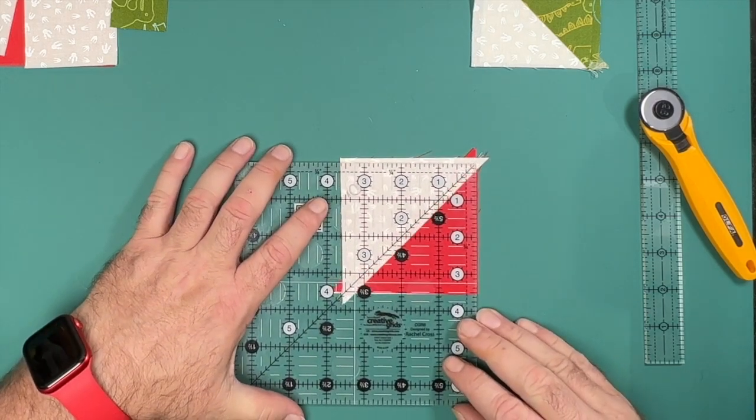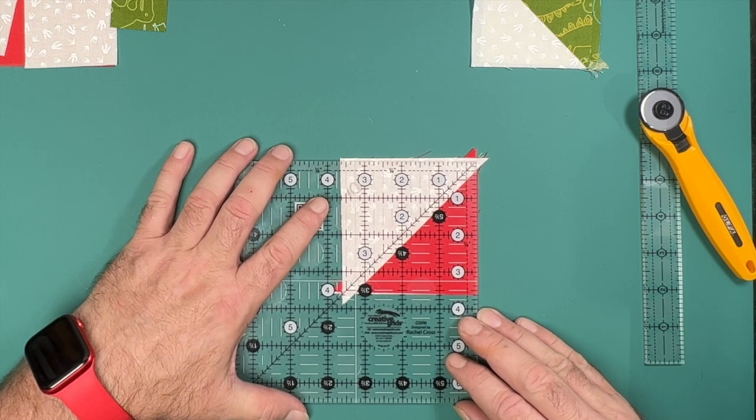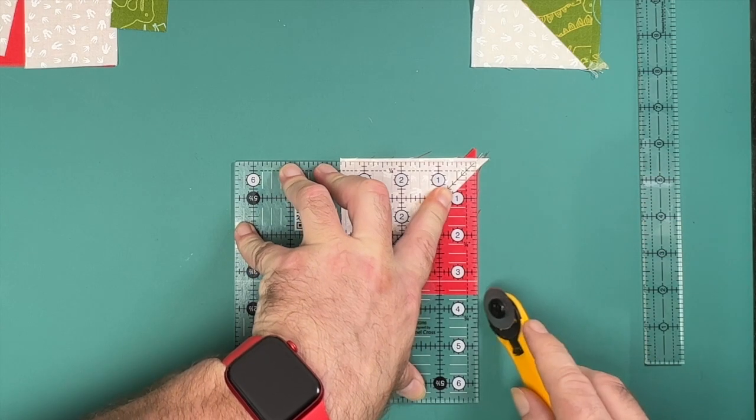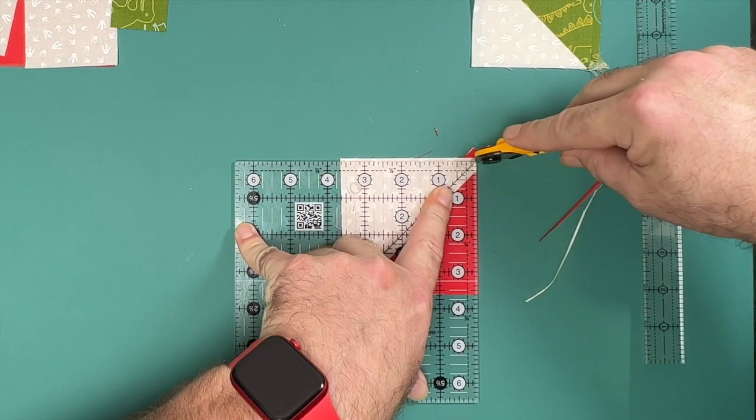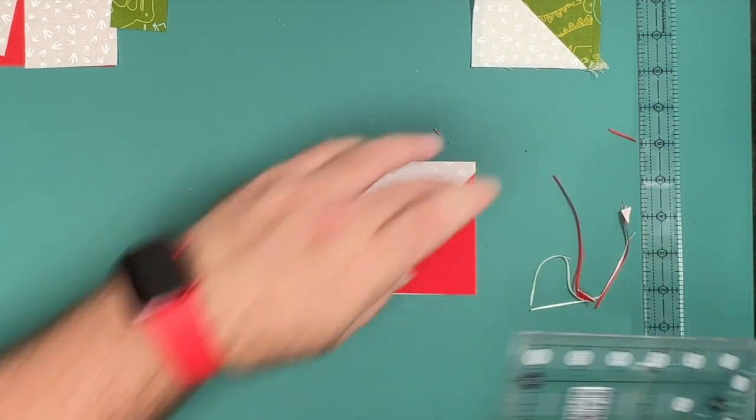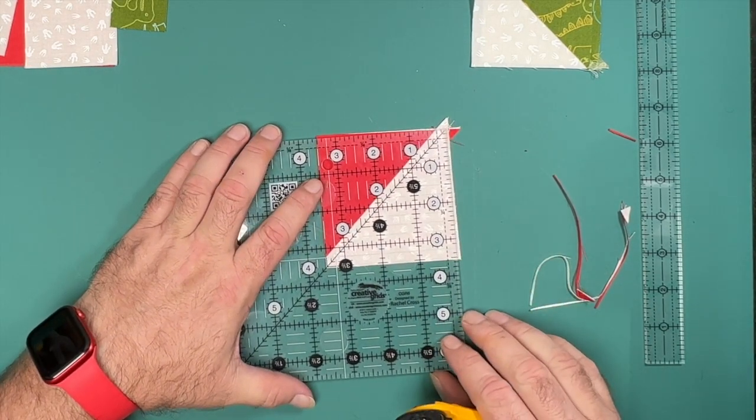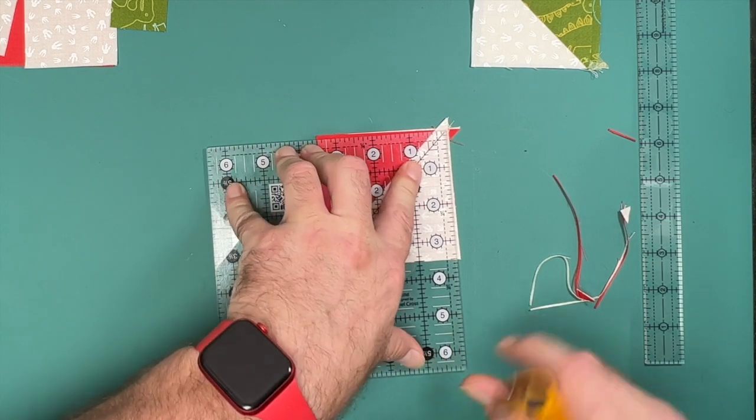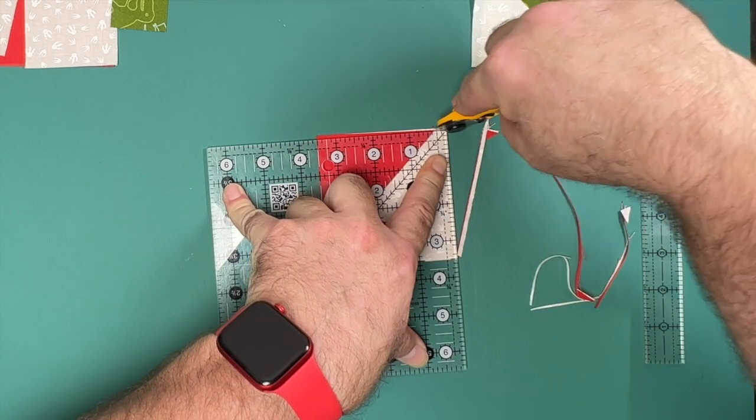I then take my six and a half inch square ruler and place the diagonal line from the ruler on my stitching line. I then ensure that I have enough fabric outside my trim down requirement on all four sides before trimming away the first two sides. We'll then rotate the block and place the ruler back, making sure we've got our diagonal line still lined up. This time we can use our trim down measurement to place on our freshly trimmed sides before trimming the final two sides. Repeat for your other set of half square triangles.